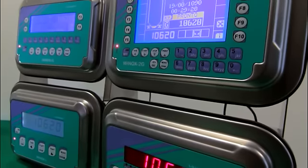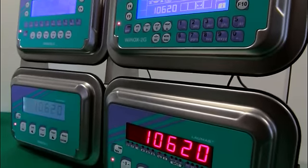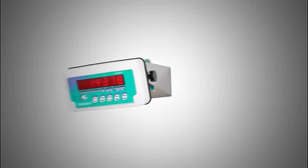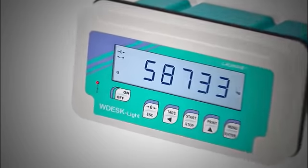W-DESC and W-ENOX models can be mounted equally easily on the front panel, wall, column or table, maintaining nevertheless an extremely high level of IP protection.